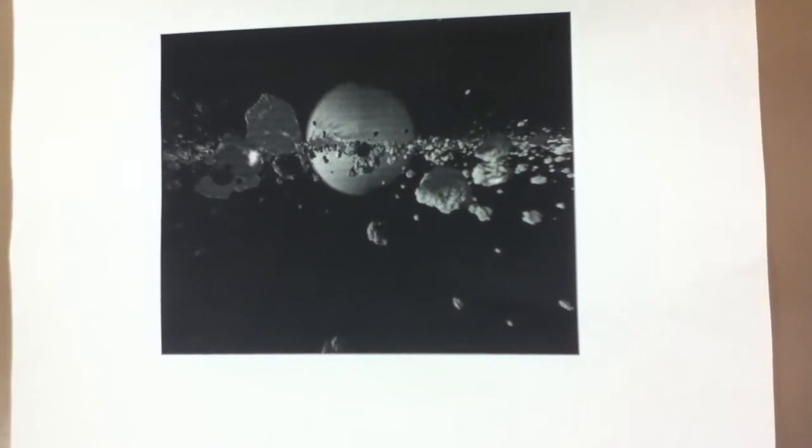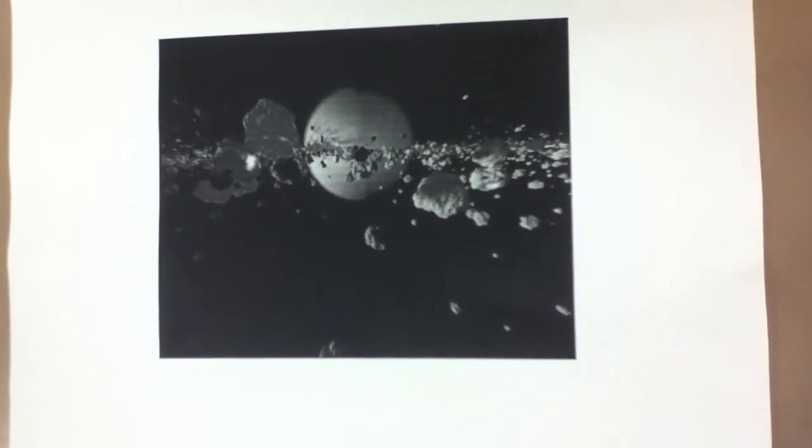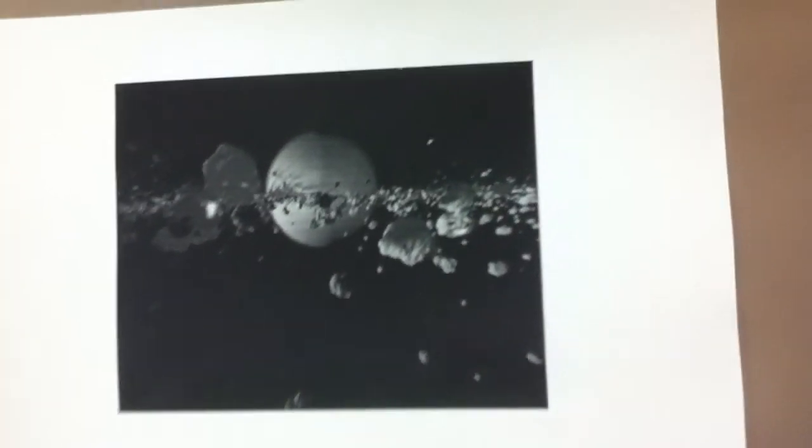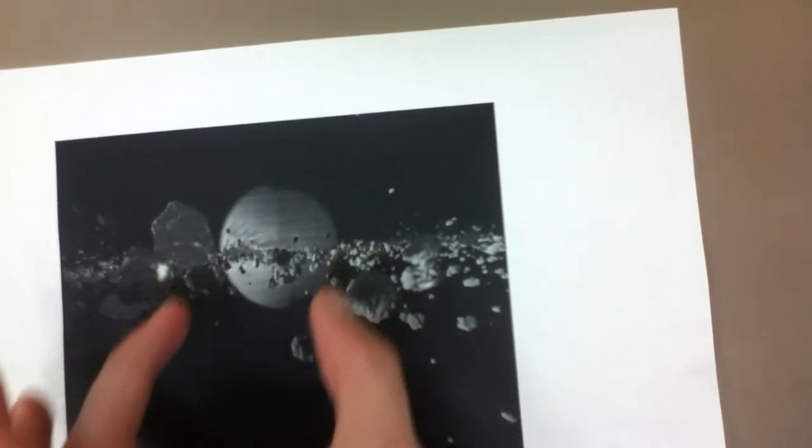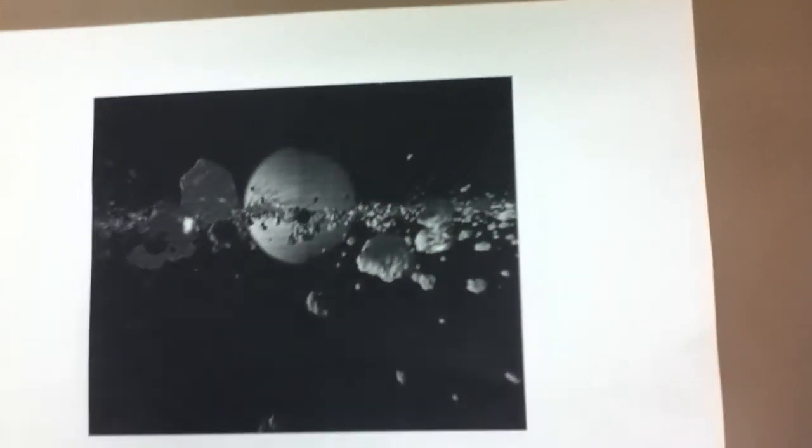Asteroids vary greatly in size, from fish size to as large as 940 kilometers across, the size of Europa, one of Jupiter's moons. That's absolutely loony. No, just no.